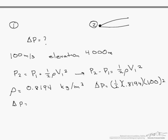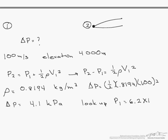Our delta P is about 4.1 kilopascals. We can also look up P1, so if we look up the pressure of air at 4000 meters, we find that equals 6.2 times 10 to the fourth Pascals, or 62 kilopascals.